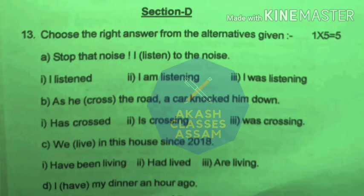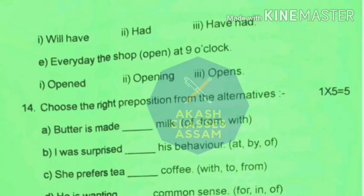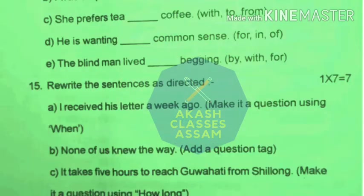Section D is the grammar section. In question number 13, you have to choose the right answer from the alternatives given. In question number 14, you have to choose the right preposition from the alternatives given — there are five questions. In question number 15, you have to rewrite the sentences as directed. For example: 'I received his letter a week ago' — make it a question using 'when'. Another example: 'None of us knew the way' — you have to make it a question tag.